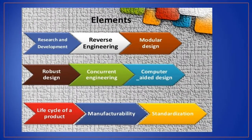There are nine elements of product design: research and development, reverse engineering, modular design, robust design, concurrent engineering, computer aided design, life cycle of a product, manufacturability, and standardization.